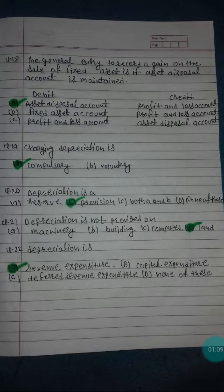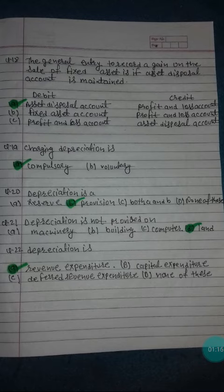Question: Depreciation is Option A - Revenue Expenditure, Option B - Capital Expenditure, Option C - Deferred Revenue Expenditure, Option D - None of these. Option A is the correct answer.